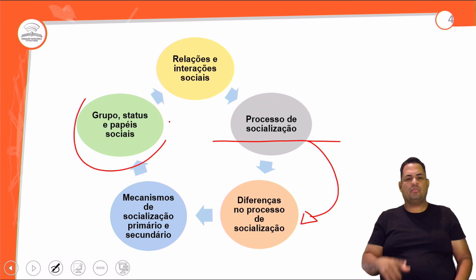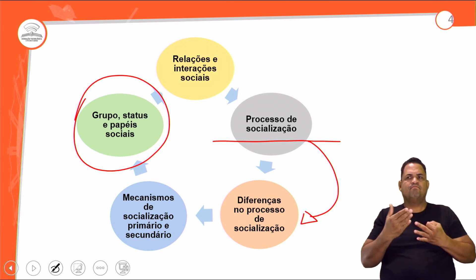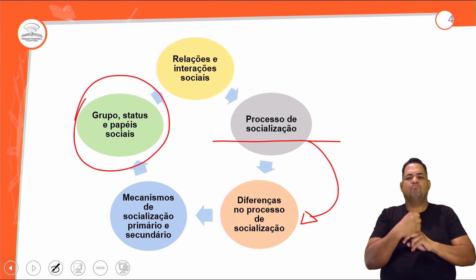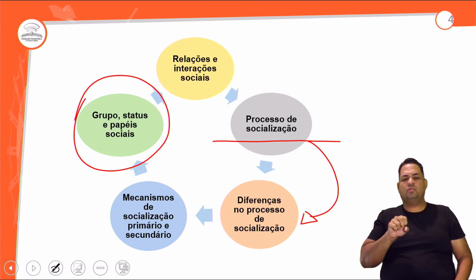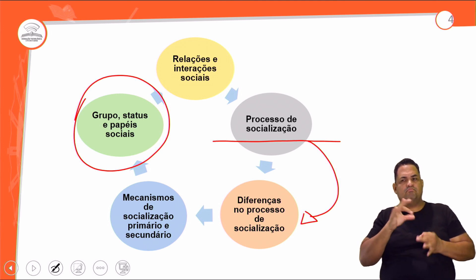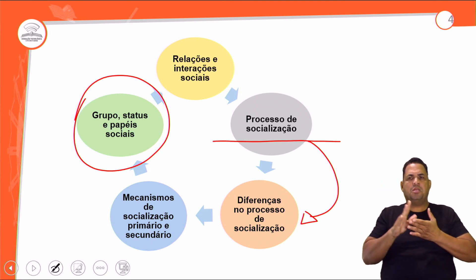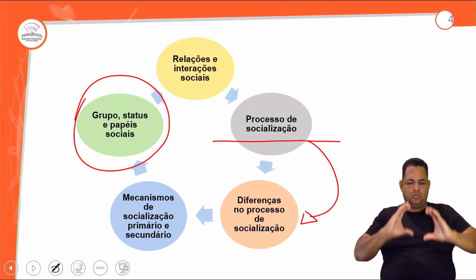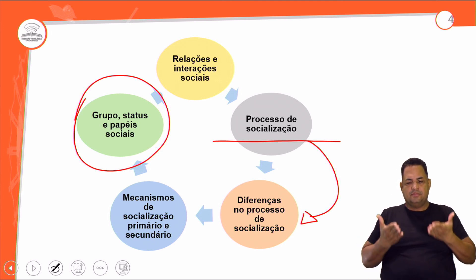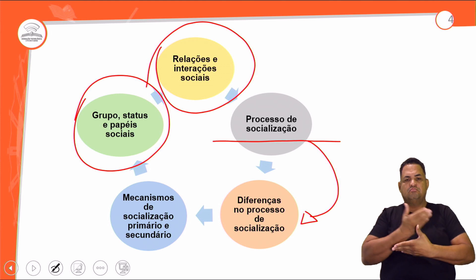O grupo social é aquele grupo de sistemas menores onde há uma afetividade maior. O status pode ser adquirido ou pode ser aquele que a pessoa nasce com ele. Papéis sociais são papéis estipulados para cada indivíduo — por exemplo, existem papéis estipulados para as mulheres e para os homens, como eles devem se comportar. Tudo isso é criado e estipulado socialmente.